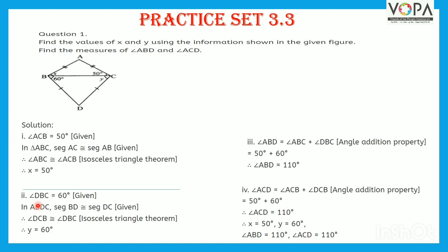Second, angle DBC is equal to 60 degrees — this is given. In triangle BDC, segment BD is congruent to segment DC, as given. So the angles opposite to these congruent sides are congruent. Therefore, Y and 60 are of equal measure, so Y is equal to 60 degrees.